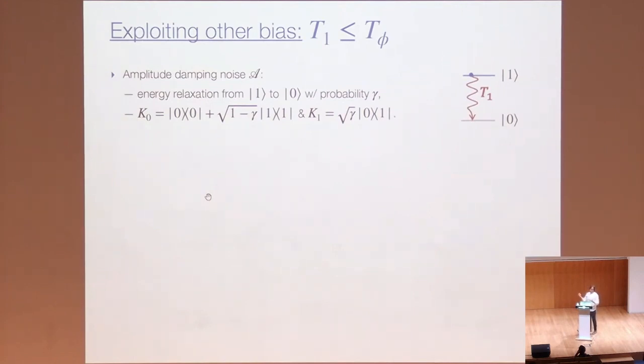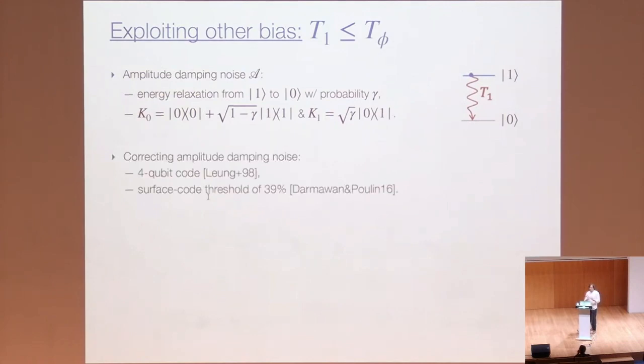One of the bias that is dominant in various quantum technologies is the bias between the amplitude damping errors and the phasing errors. Typically, the amplitude damping time T1 is shorter than the phasing time T5. What is the amplitude damping noise? Typically, we define a qubit as a subspace spanned by two states that correspond to different energies. The amplitude damping noise models energy relaxation from the excited state to the ground state that happens with probability gamma. This channel is described by two Kraus operators, K0 and K1 listed on the slide.